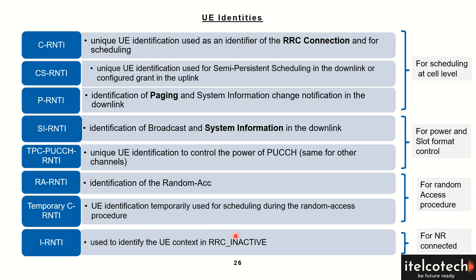During RRC inactive mode, where the UE is in the middle of idle and connected mode — the connection is built up between the core network and the user but data is not transmitting — in that case the UE is identified by I-RNTI. These different identities are quite useful when doing troubleshooting to analyze which particular state the user is in at a given point in time.